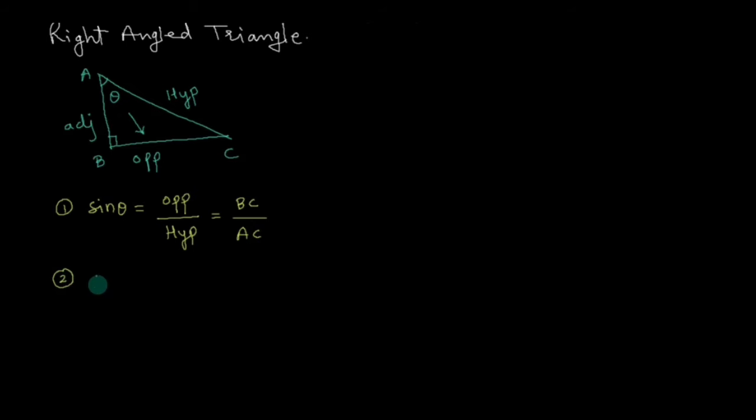Second, we'll take cos theta. The cosine ratio is the ratio of adjacent side to hypotenuse. Here we have cos θ = AB/AC. Third is tangent, tan theta. It's the ratio of opposite side to adjacent side: tan θ = BC/AB.